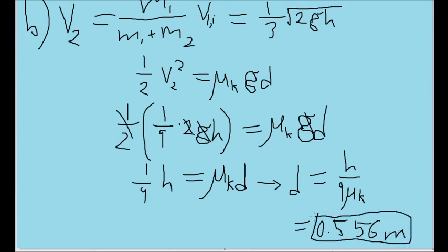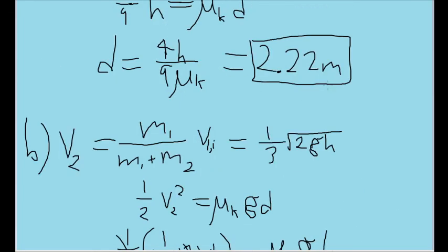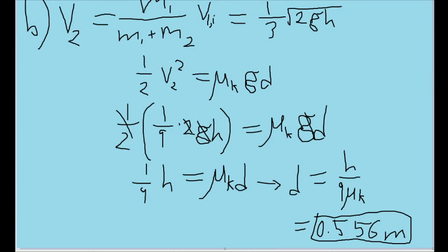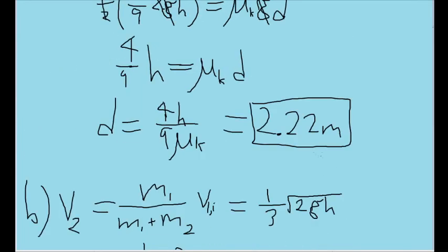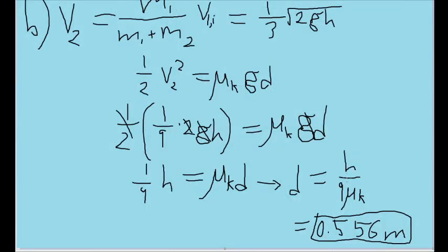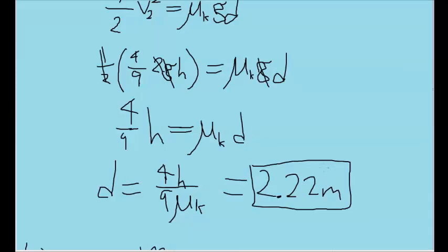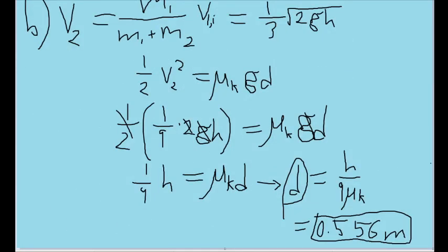Notice how much shorter this is than the distance we had in the case of an elastic collision. In fact, if you do the math, you'll see that our inelastic distance is exactly one fourth of the distance traveled elastically, which makes sense because if you examine our final formulas for the Ds, the only difference is that in the inelastic case it is lacking the 4 that was up here in the elastic case.